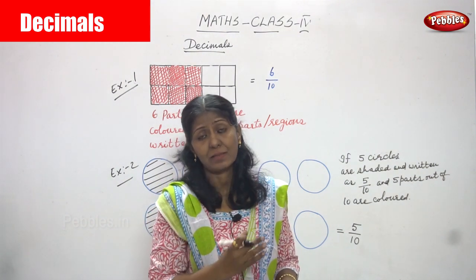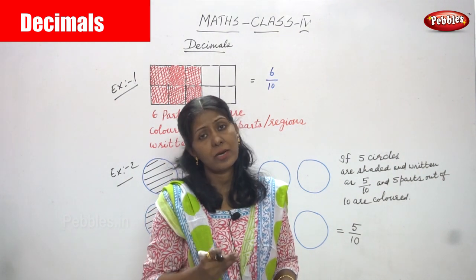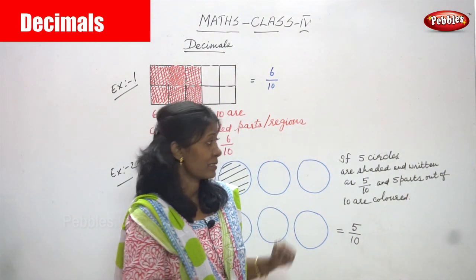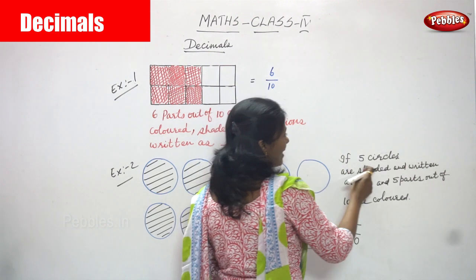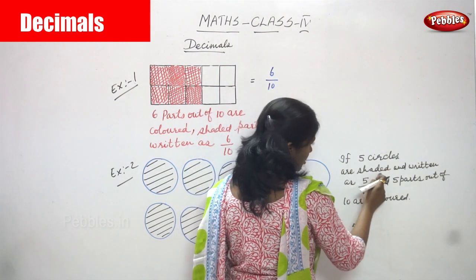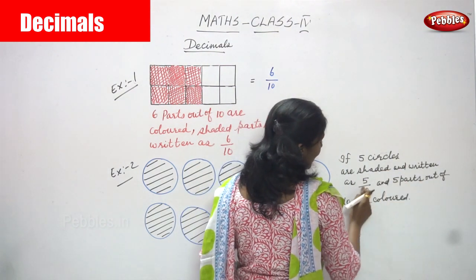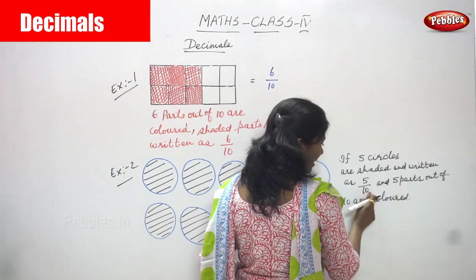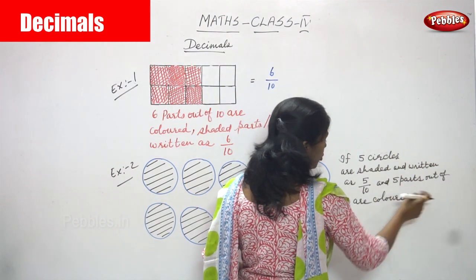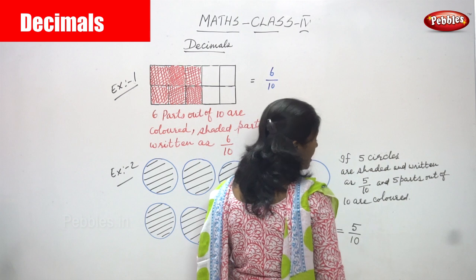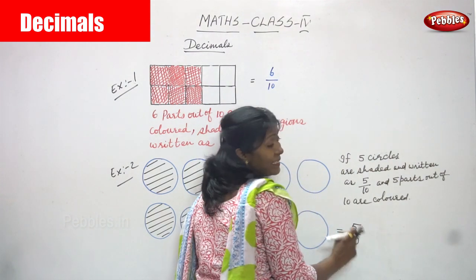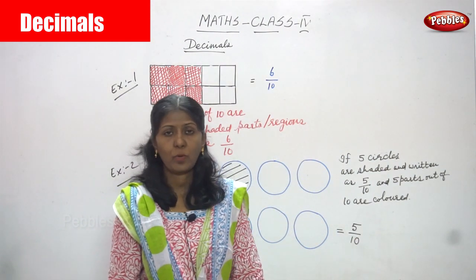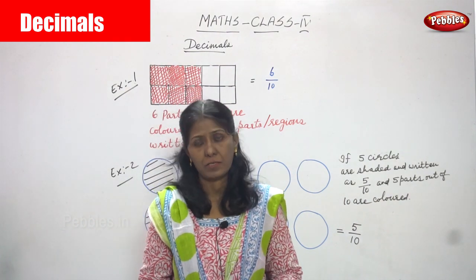I'll repeat once again. I've drawn how many circles — 10 circles. From these 10 circles, I shaded or colored only 5 circles. That is what I've written: if 5 circles are shaded, it is written as 5 by 10, and 5 parts out of 10 are colored in black. The answer is 5 by 10. This is a decimal fraction.